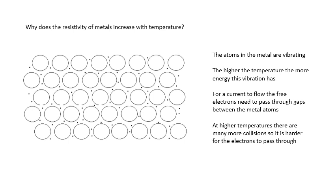They're not just sat there doing nothing. And the higher the temperature, the more they vibrate, the more vigorously they vibrate. And because of that, it's harder for the electrons to get through the gaps. If you do have to explain it, use the word collisions. There are more collisions.